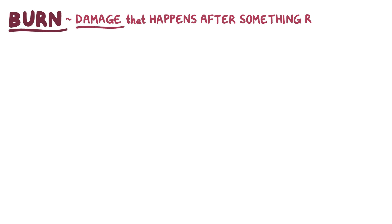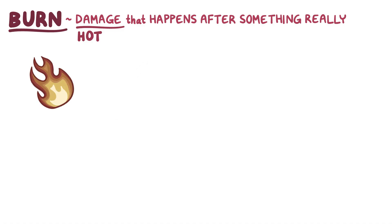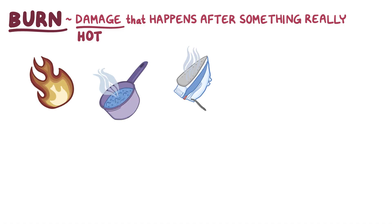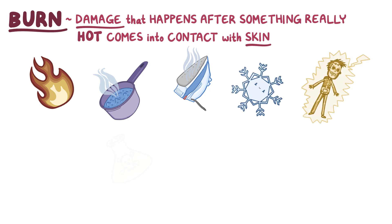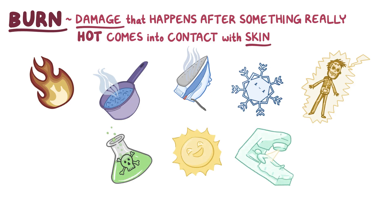A burn is the damage that happens after something really hot, like a fire, hot water or steam, or even a hot object comes into contact with skin. But burn injuries can also be caused by extreme cold, electricity, some chemicals like strong acids, or radiation, like from the sun or medical treatments. Ultimately, burns cause damage and inflammation of the skin.